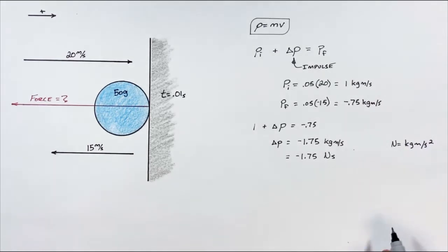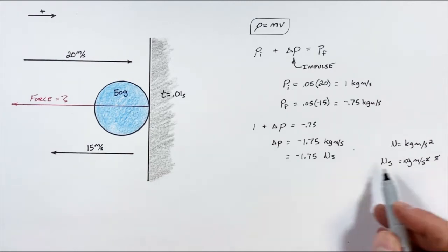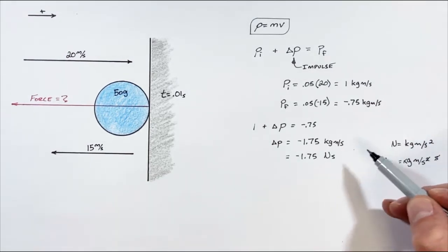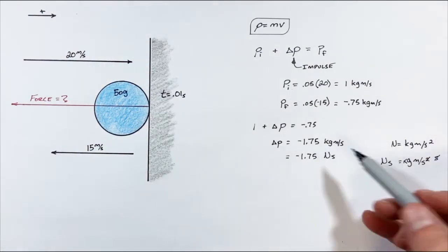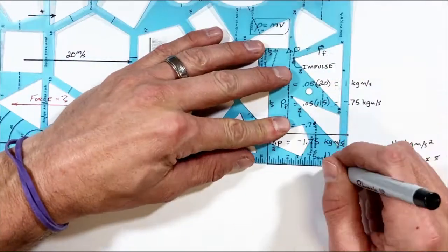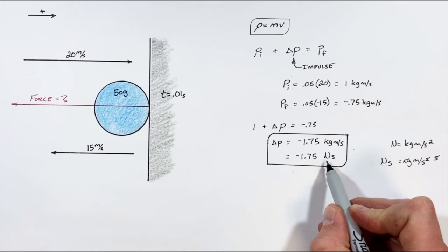Remember, a Newton is a kilogram-meter per second squared, so if we multiply a Newton by a second, we get a Newton-second, which is actually the same as a kilogram-meter per second. Regardless of how you show the units, they mean the same thing. The impulse is negative 1.75.